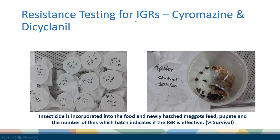For the resistance testing of cyromazine and dicyclanil, because they are IGRs we had to do a different type of test. We incorporate the insecticide into the food, put newly emerged first instar larvae on there, and let them go through their entire development phase on that media. When I say there were survivors against cyromazine and dicyclanil, I'm actually talking about adult flies having hatched out — because these are what will be the next generation to produce strike on your sheep.